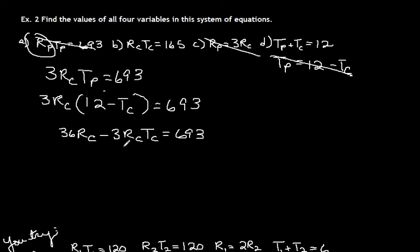And look how nicely this works. RCTC equals 165, and we have RCTC. So we will just put in there 165.